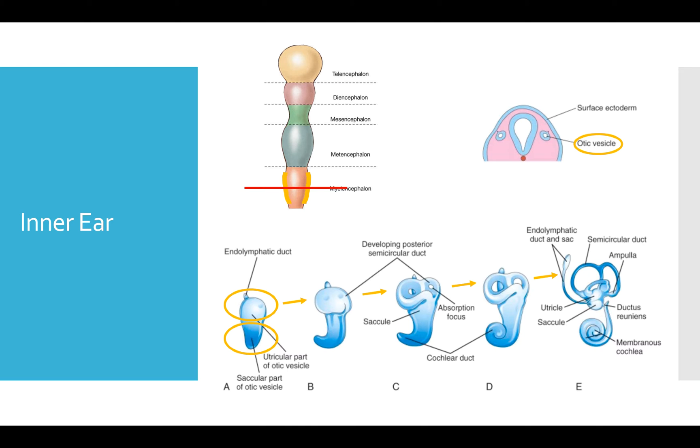Now the more inferior part, the saccular part, elongates and coils simultaneously. And this is what forms the adult cochlea. And what's really unique about this embryonic development is that as it's growing, it's also coiling at the same time.